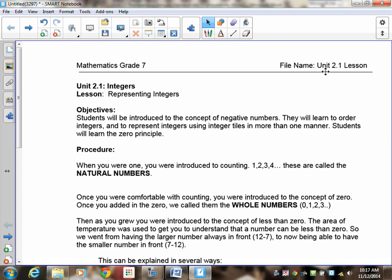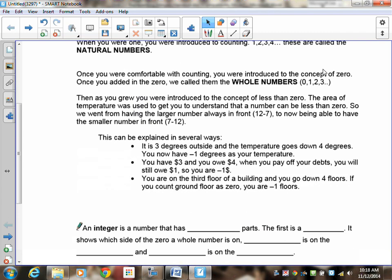To begin, when you were 1 or 2 or 3, when you first started learning to count, your mom would hold up fingers and you'd go one, or she'd hold up two fingers and you'd go two. These were called the natural numbers. Once you were comfortable with counting ones, twos, and threes, then your mom probably held up her hand and had all the fingers closed in a fist, and you didn't have anything to count. And that was your first introduction to the concept of zero. And because zero is such an important number, they decided to give it its own name, so when you include zero with the natural numbers, they call this whole numbers.